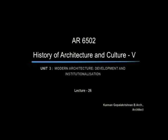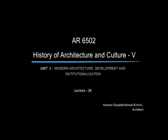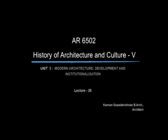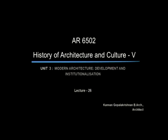Welcome back to UGC lecture series. This is AR 6502, History of Architecture and Culture 5. We are in Unit 3, dealing with modern architecture, its development and its institutionalization. We are in Lecture 26, wherein we saw De Stijl and Bauhaus in the previous lecture.